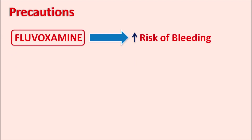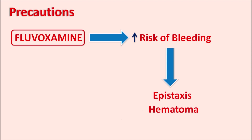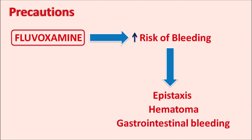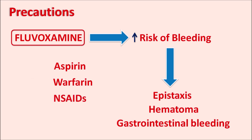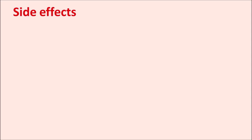Fluvoxamine can increase the risk of bleeding, resulting in conditions such as epistaxis, nasal bleeding, hematoma, and gastrointestinal bleeding. This risk is further increased with other drugs such as aspirin (an antiplatelet agent), warfarin (an oral anticoagulant), and antacids.